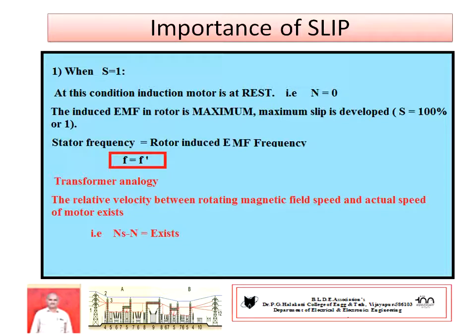This condition is referred to as transformer behavior or transformer analogy. There is a relative speed between Ns and N, and it is also observed that the stator frequency equals the rotor induced EMF frequency — that is, f equals f-dash.